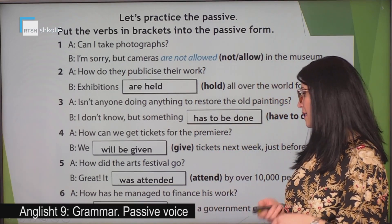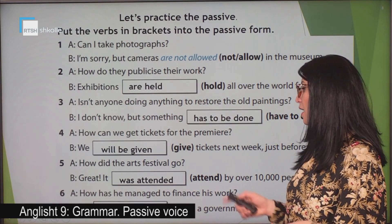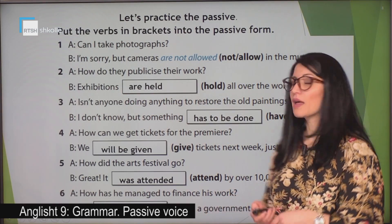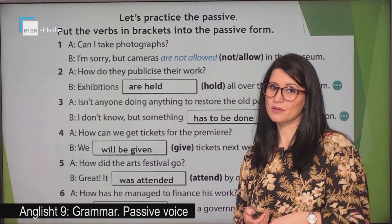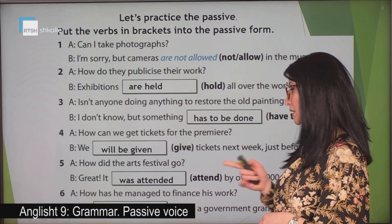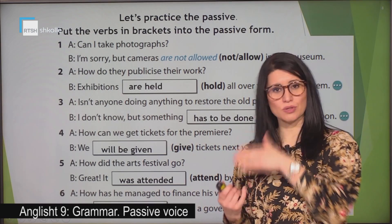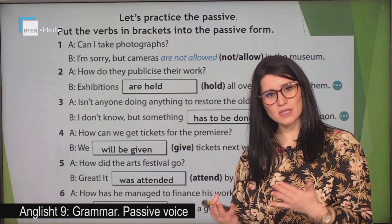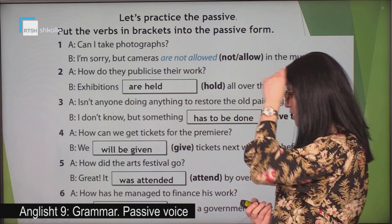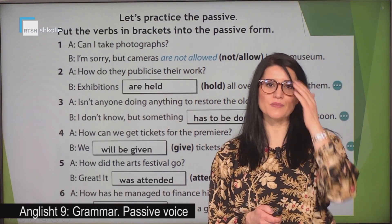How has he managed to finance his work? And we have the word 'give' here. Have a look at the question — what tense is it? It is in the present perfect. So the same tense is used in the passive: he has been given a government grant.